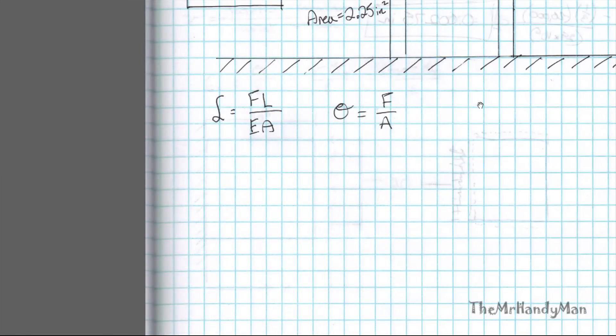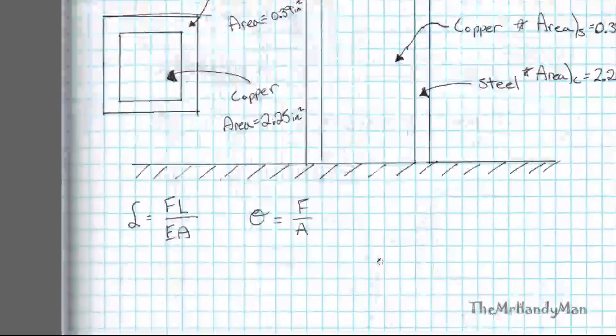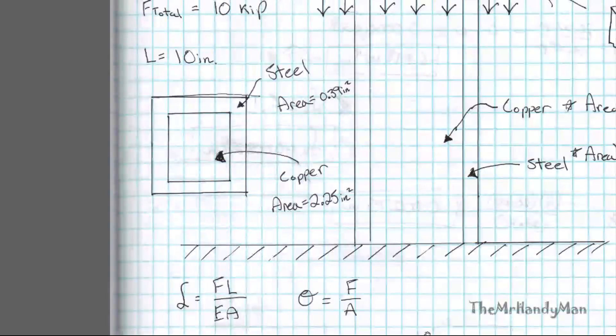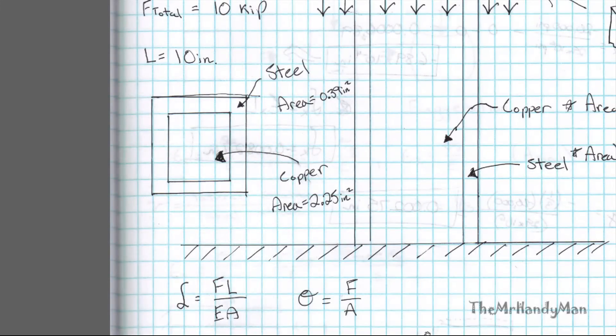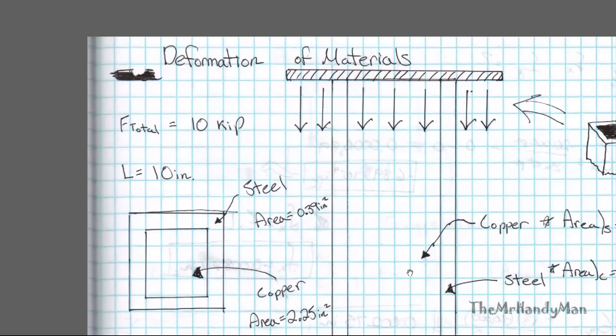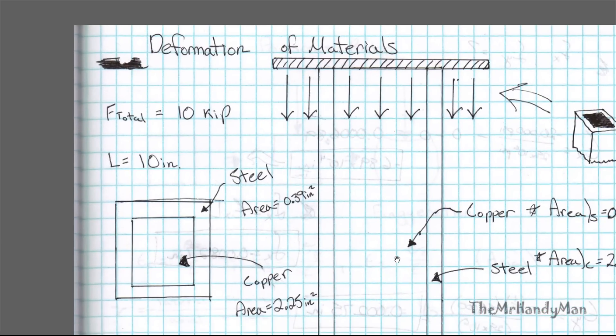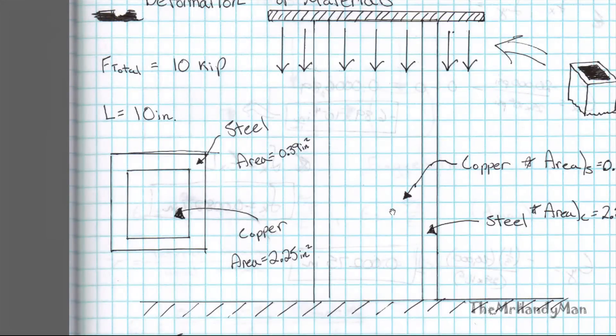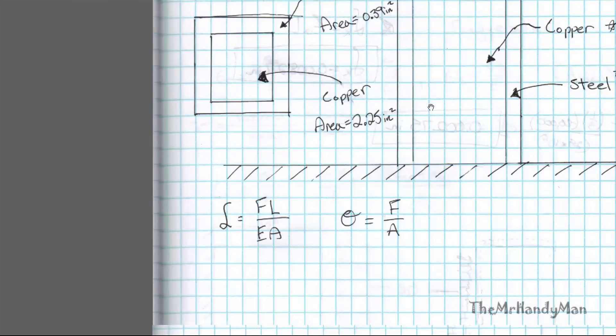And so the first thing we need to note is that due to the differing modulus of elasticities, each of these materials will deflect differently. And not only because of the elasticity but also because of the surface area, the cross sectional area. So what we're going to do is we're going to set a condition that will allow us to set up some sort of ratio between the different deflections.